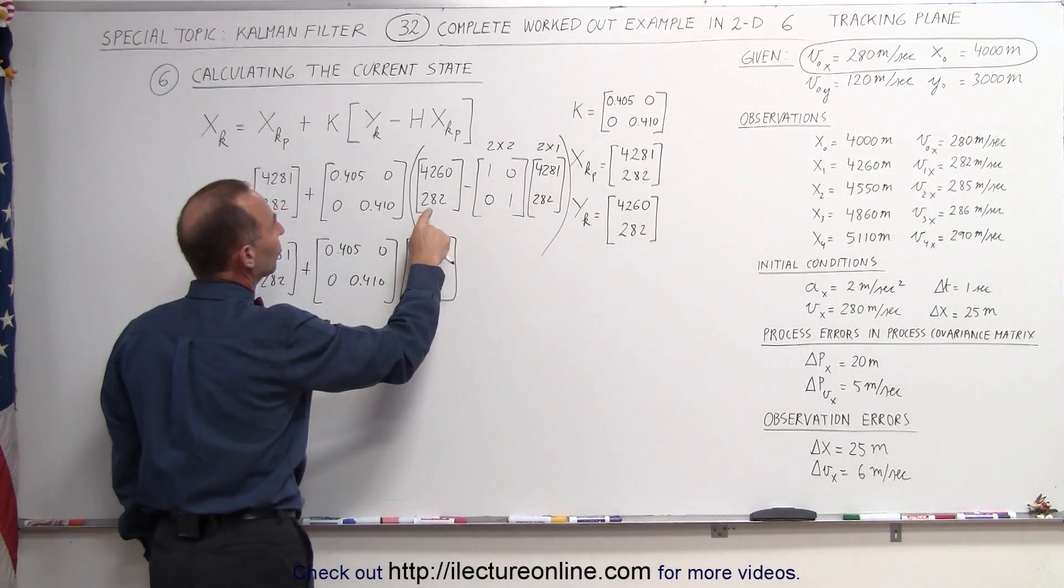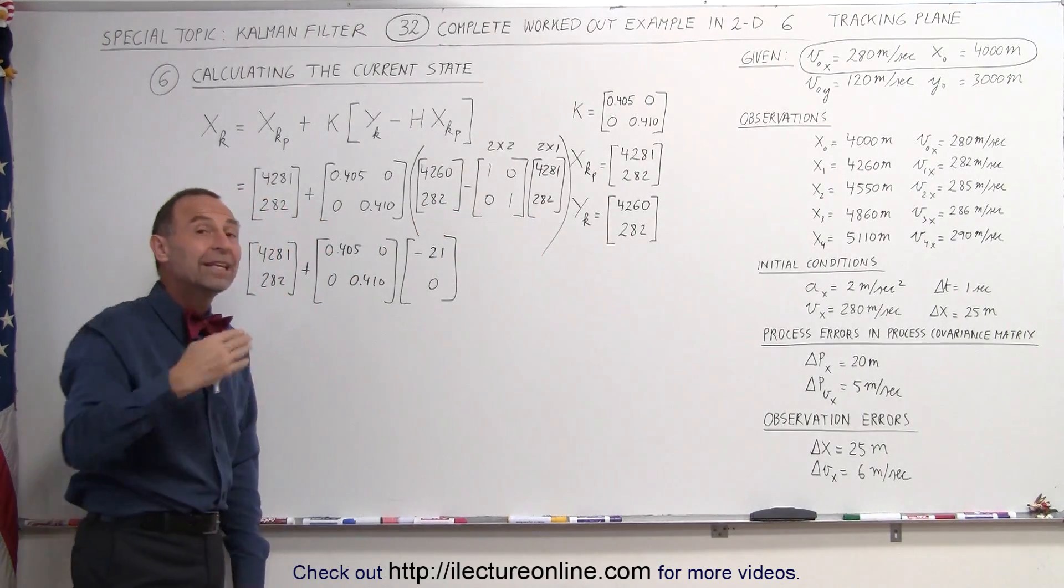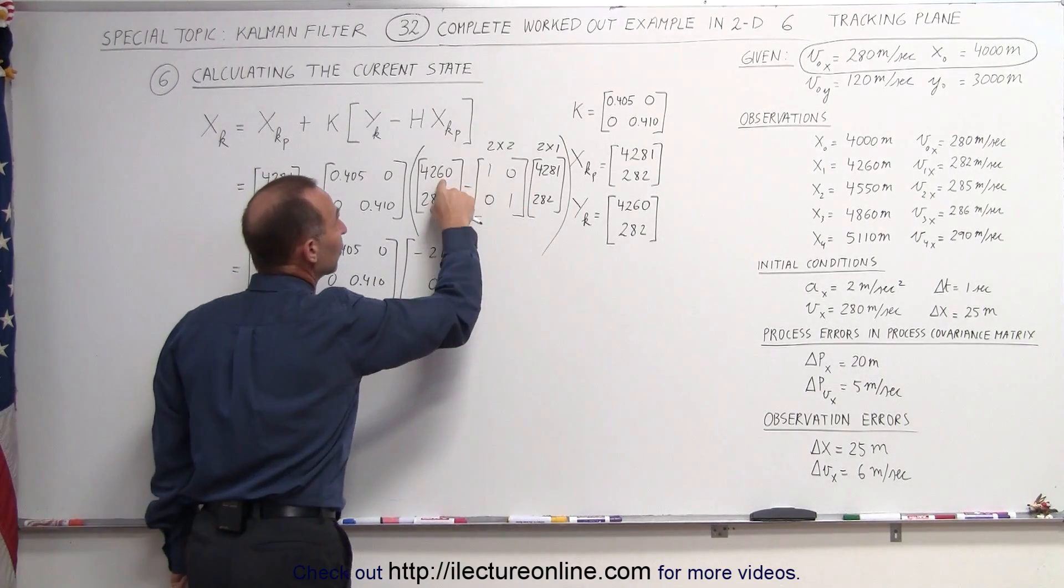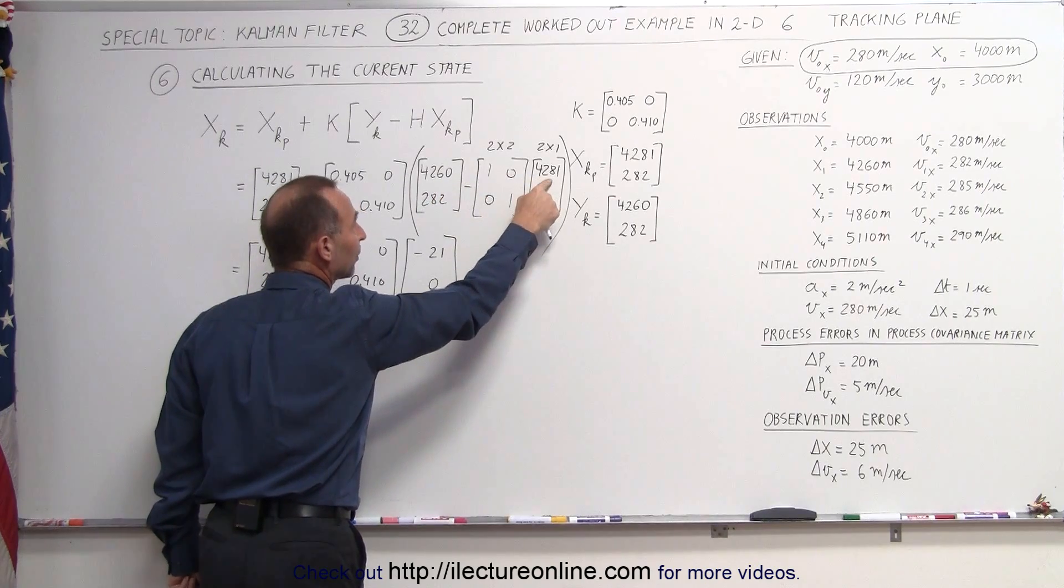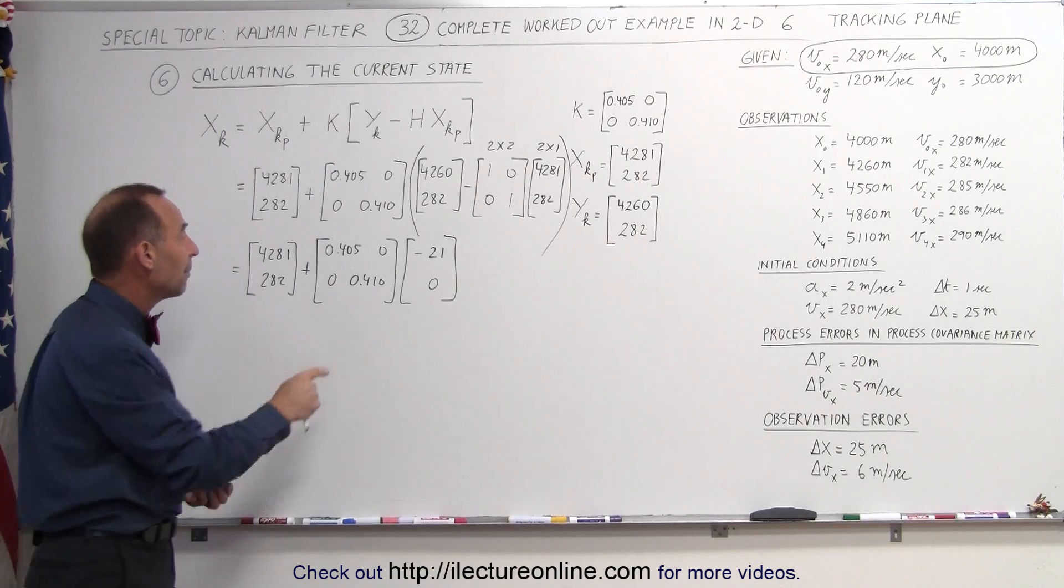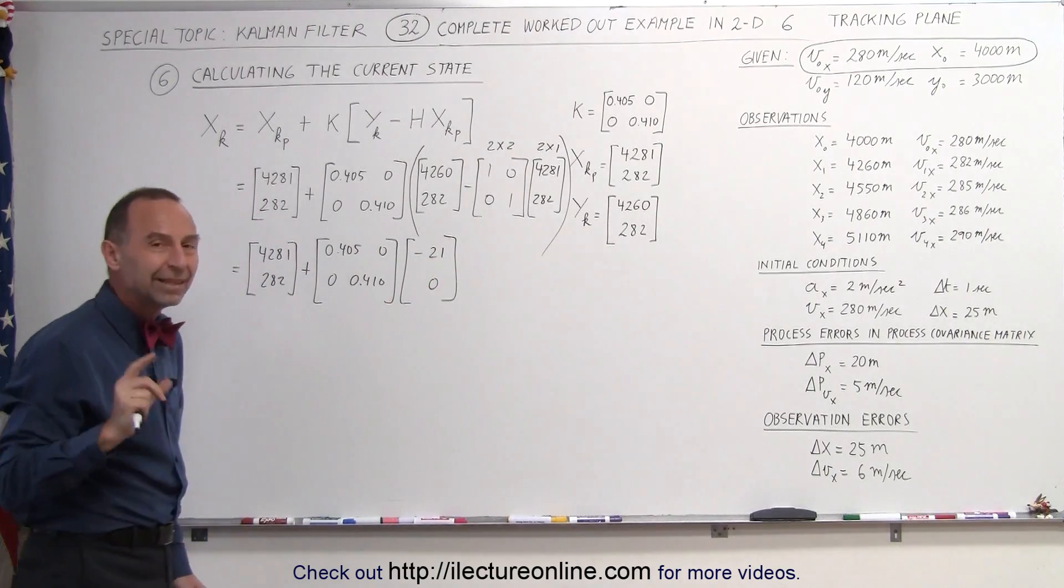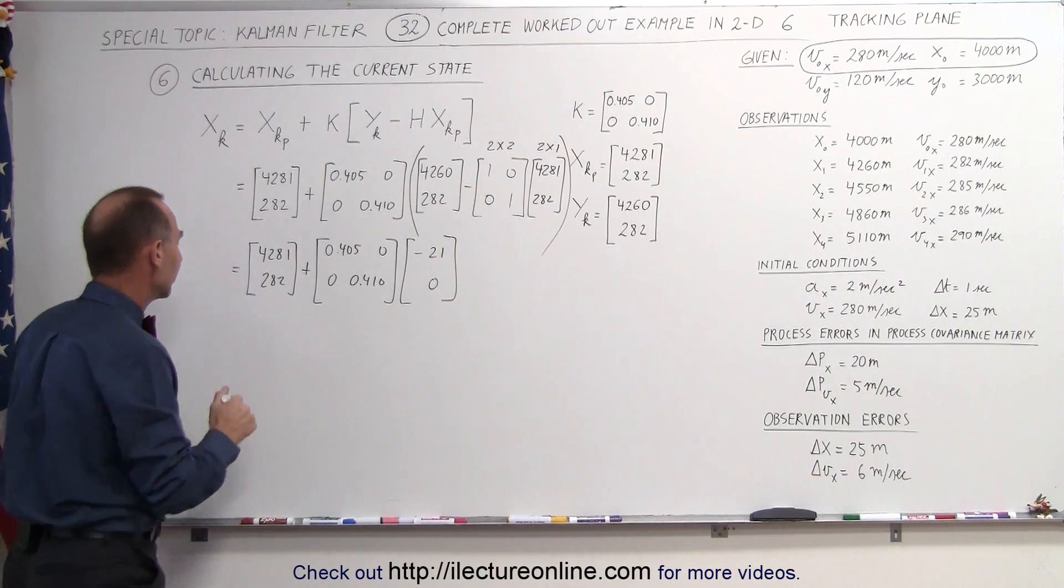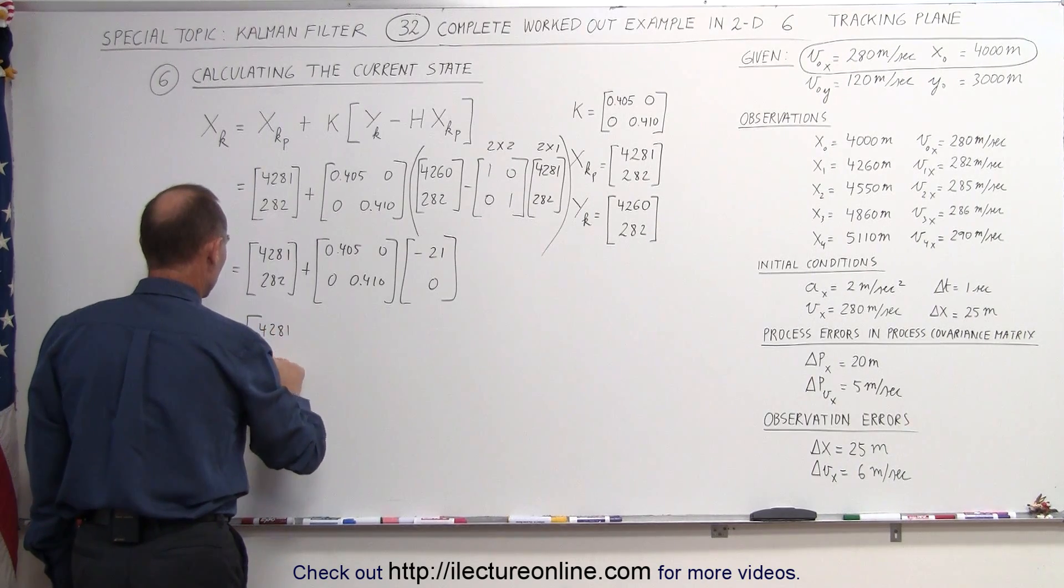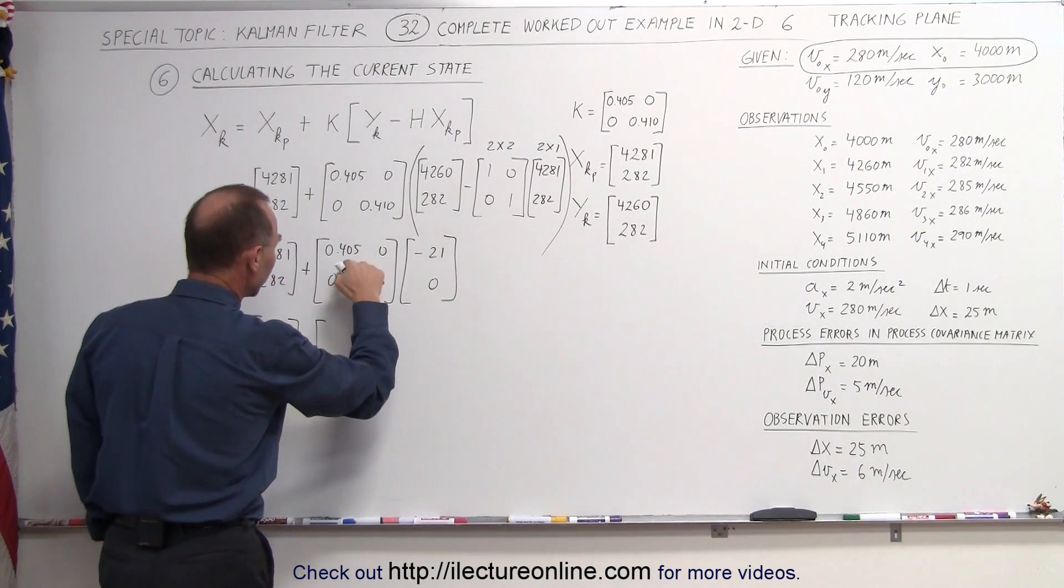Notice, since the predicted state matched the measured value, there doesn't need to be any change or any adjustment with the Kalman gain. But since the measured value was different from the predicted value on the position, we will have to make some adjustment using the Kalman gain. And depending upon how big the Kalman gain is, we'll take a certain percentage or a certain fraction of that difference between the measured value and the predicted value.